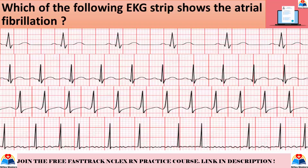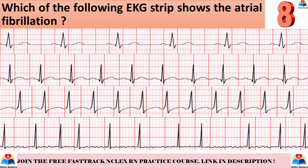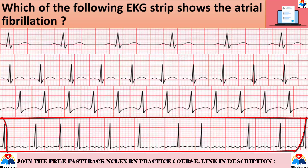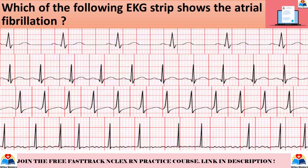Which of the following EKG strips shows atrial fibrillation? The first strip is normal sinus rhythm, the second is sinus tachycardia, the third is supraventricular tachycardia, and the correct answer is the last option. Supraventricular tachycardia has a normal rhythm and shows frequent QRS complexes, so you won't see many other waves in between these QRS complexes in supraventricular tachycardia.